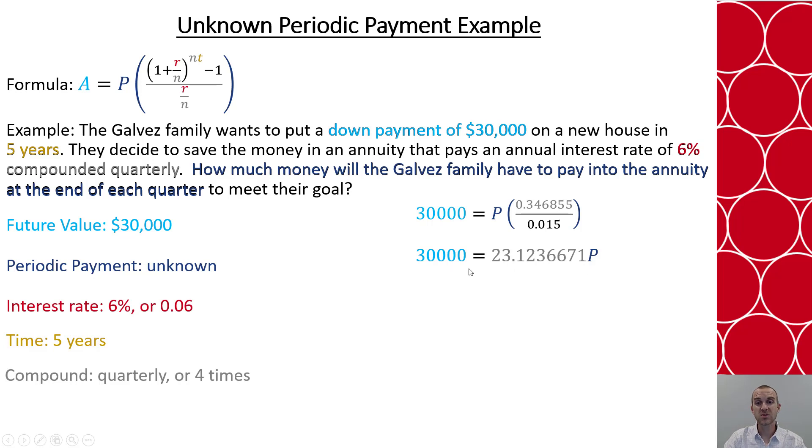So I'm going to divide both sides by that value, and that's going to give me 1297.372. And that's rounded because we're dealing with money, so I can look at that thousandths place to understand how to round. And I see here then that the Galvez family will have to make a quarterly payment of $1,297.37. In other words, every three months they're going to put this amount of money into the annuity for five years.